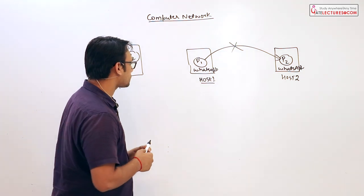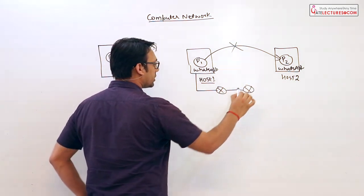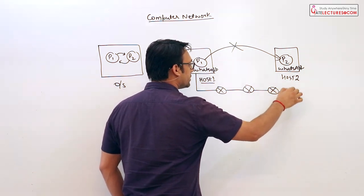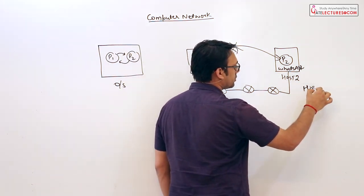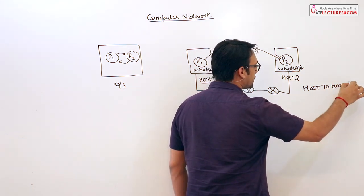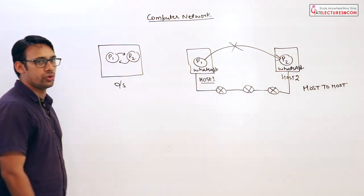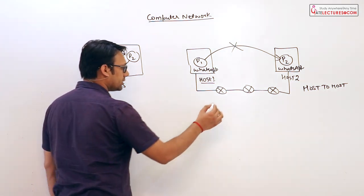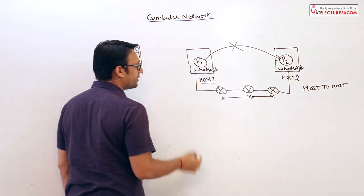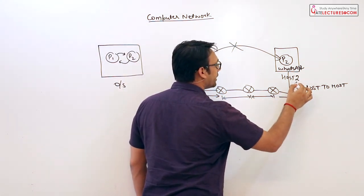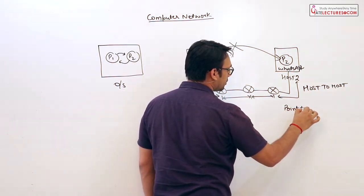To perform this responsibility there are various layers and types of connections. For example, a host can be connected to a router, that router to another router, and so on until it reaches the destination host — this is called host-to-host connectivity. When we talk about the connection from one router to the next router, that is called point-to-point connectivity.